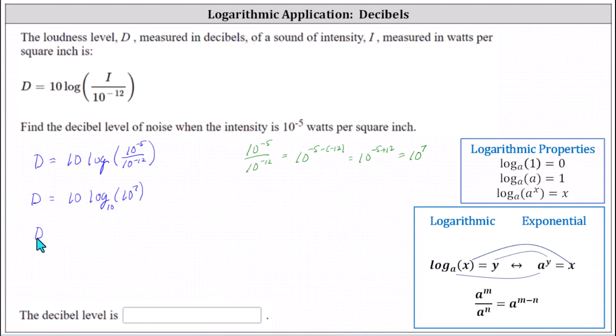This gives us the decibels D is equal to 10 times 7, which is equal to 70. The decibel level is 70. I hope you found this helpful.